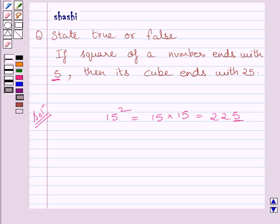Now let us check if its cube ends with 25. Multiplying 15 three times, we get 3375. Now cube of 15 does not end with 25.